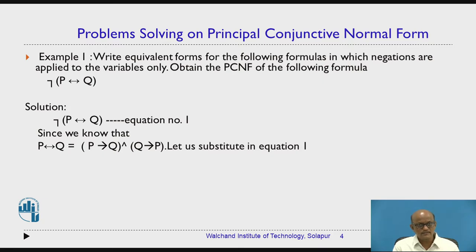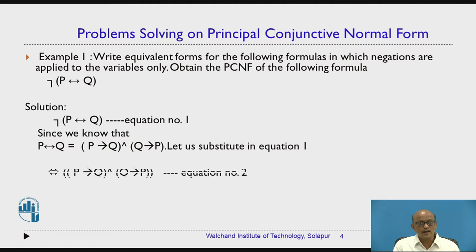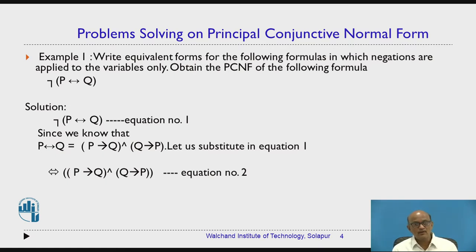Let us substitute this formula in equation number 1. Equation number 1 will become negation of bracket P conditional Q AND Q conditional P. The outer negation will go off, so it will be only P conditional Q AND Q conditional P. This is equation number 2.